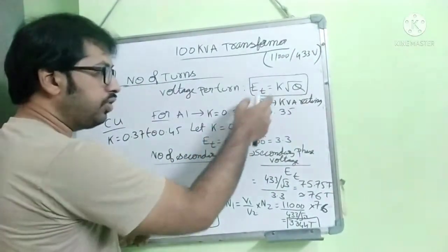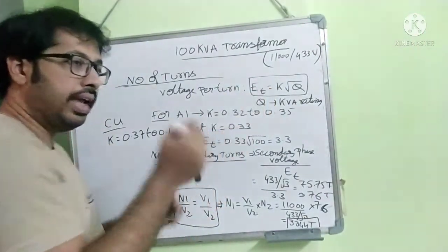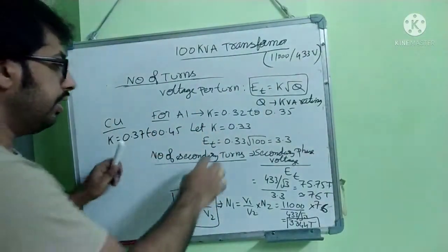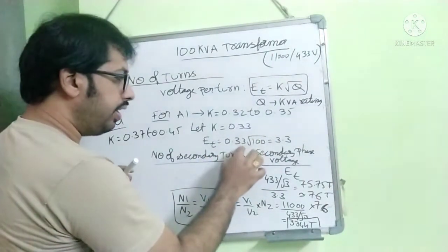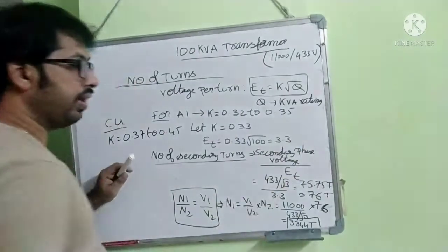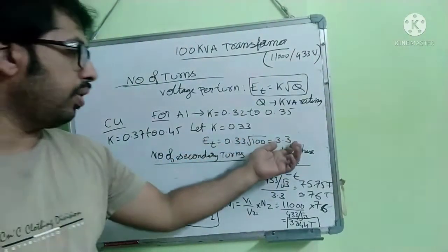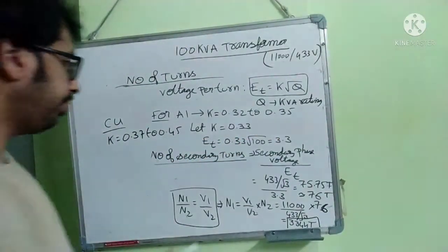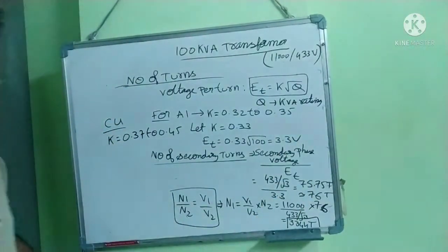Now I am substituting this formula voltage per turn. What is voltage in one turn? That is 0.33 into under root, kVA rating is 100. It is 3.3. Voltage per turn is 3.3 volts.